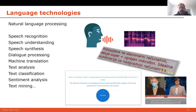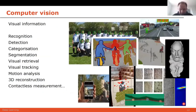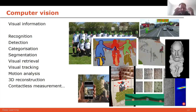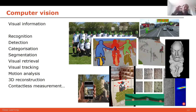Computer vision is the field I'm working on. We'll show examples from recognition, detection, categorization, visual retrieval, tracking, motion analysis, 3D reconstruction, and contactless measurement. All the information that we can extract through our eyes — but eyes are only the sense organ, the brain is the machine that makes use of this sensory information — all that stuff is something that computer vision would like to do. Vision is the most important sense for humans. That's why I see no reason it wouldn't be the most important sensor for robots and other intelligent machines as well.